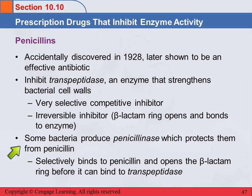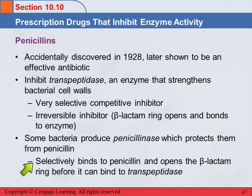Some bacteria produce an enzyme called penicillinase, which protects them from penicillin. This is the phenomenon we've heard about in the news — that the overuse of antibiotics is giving rise to antibiotic-resistant bacteria, and it's definitely a problem. The way penicillinase works is it binds to the penicillin and opens the beta-lactam ring before the penicillin can bond to the transpeptidase and disable it — so it takes the penicillin out before it can do its job.